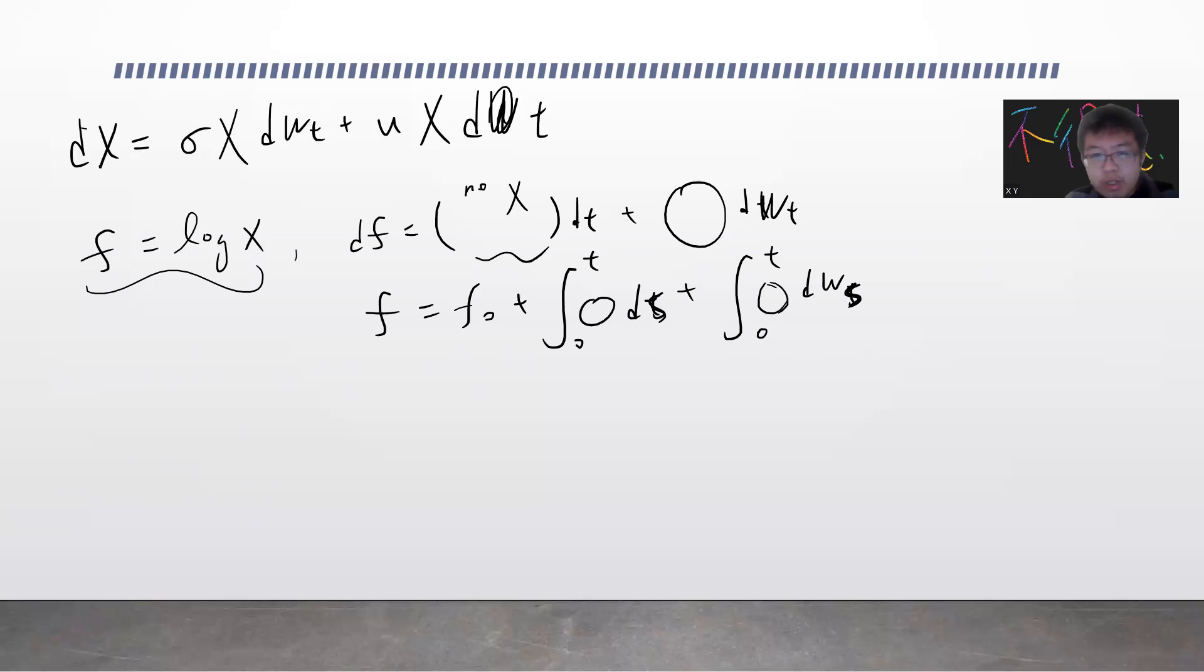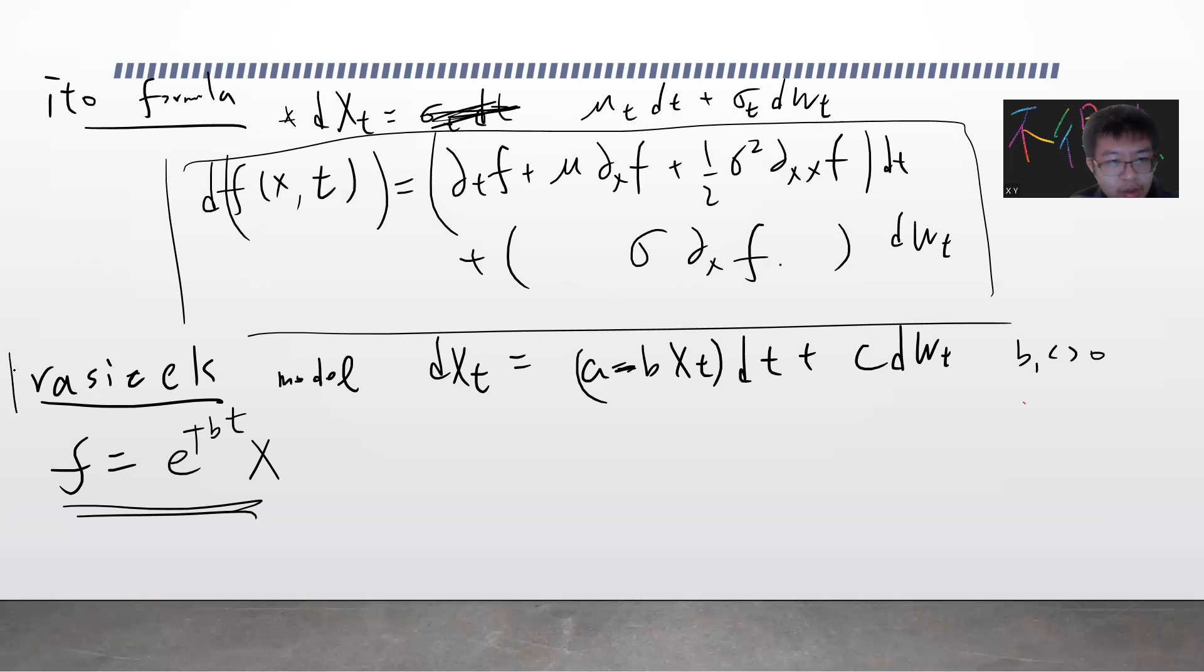The trick is to define f to be e^(bt)X. Now we need to plug this f into Itô's formula. Before we do this, we should make a table to make everything clear.